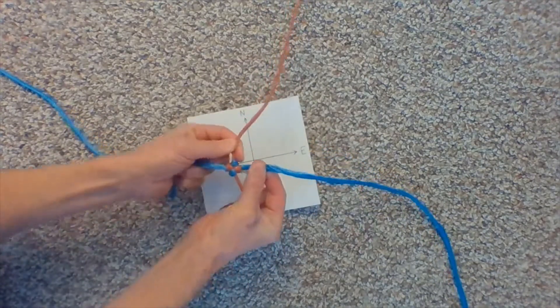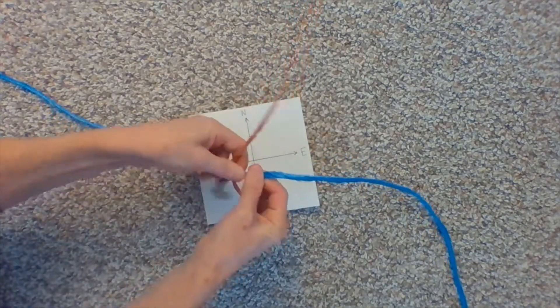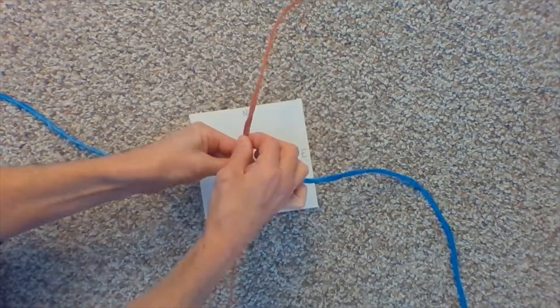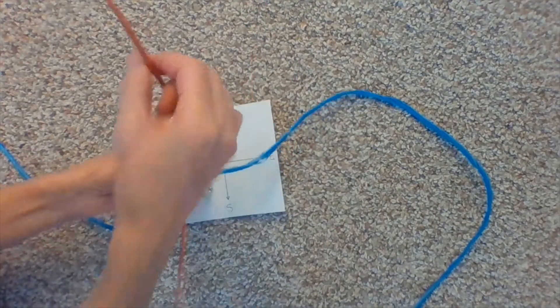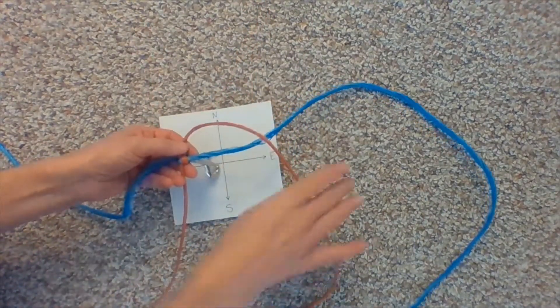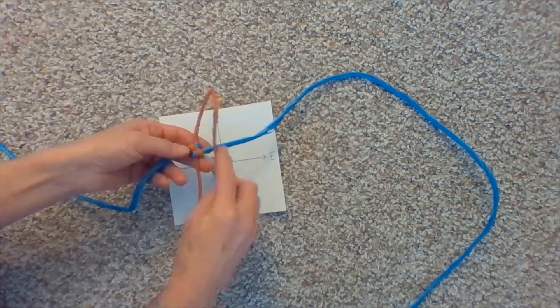And then, this is what you will just keep doing through the whole length of the twine. So, again, we are looping the orange pieces.